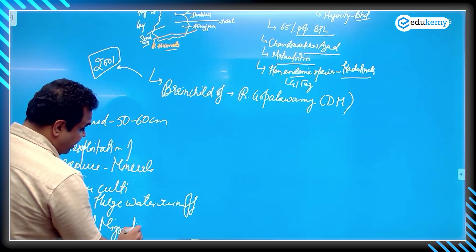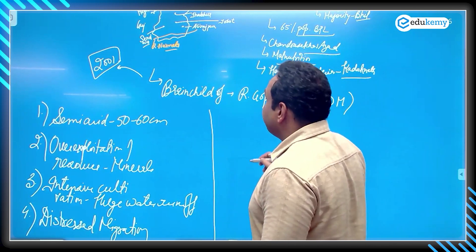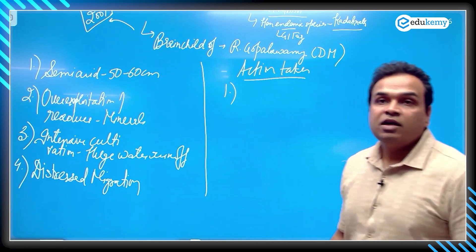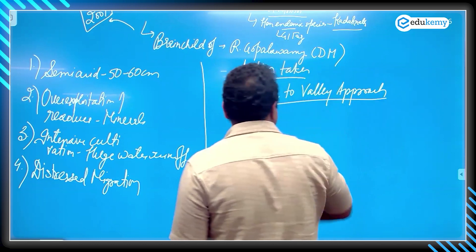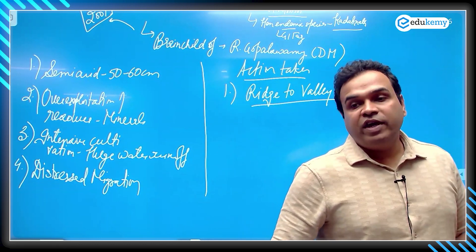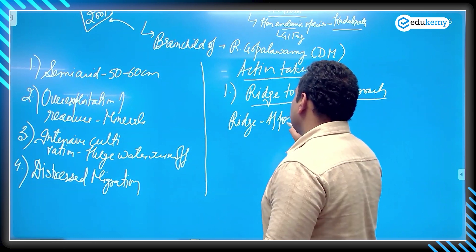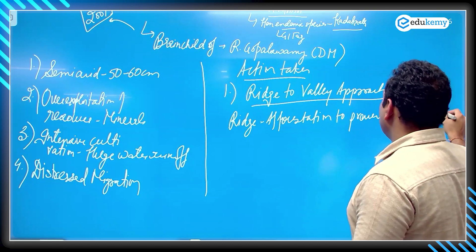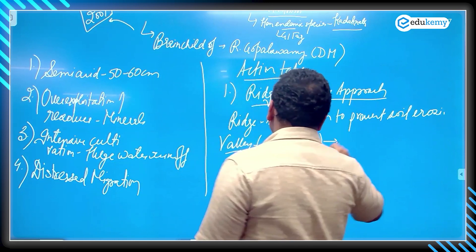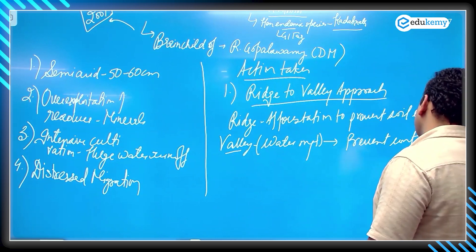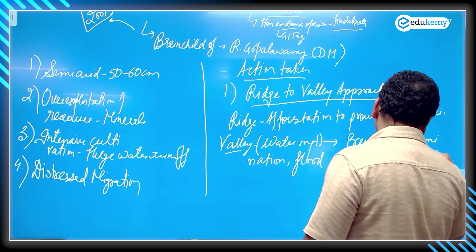The IAS officer and the entire administration made efforts and took action. They initiated a ridge-to-valley approach - an integrated way of addressing the problem from top to bottom. Ridge management meant afforestation to prevent soil erosion. Valley management meant water management, including preventing water contamination, flood protection, and wetlands restoration.